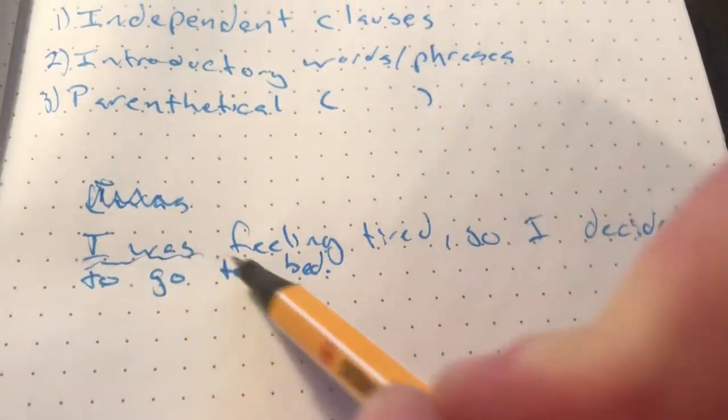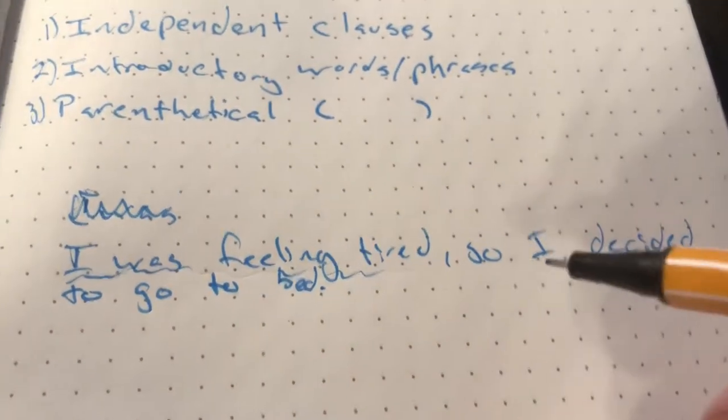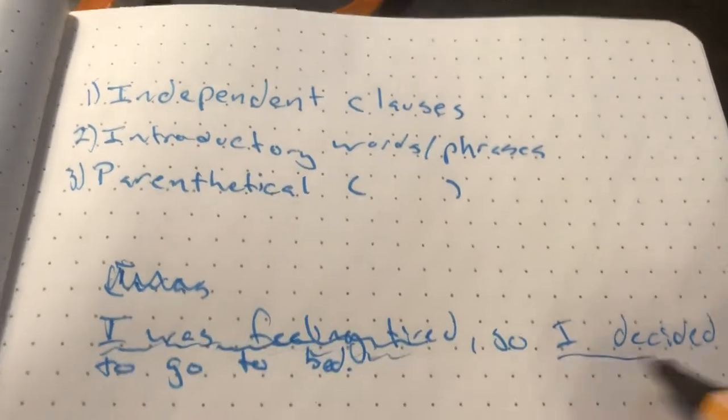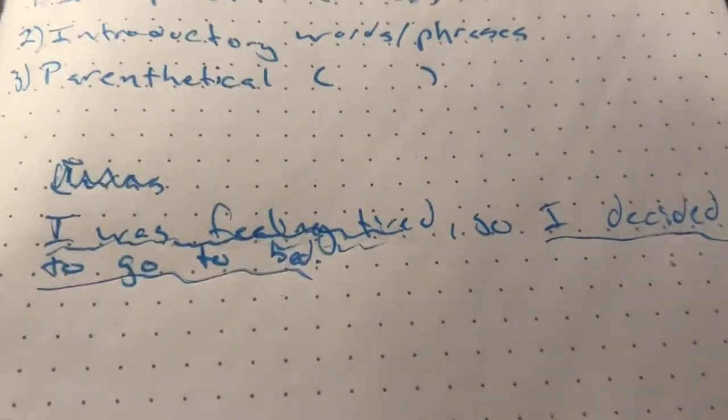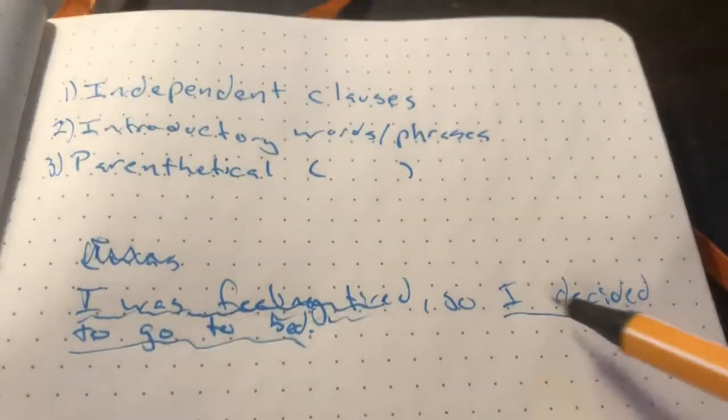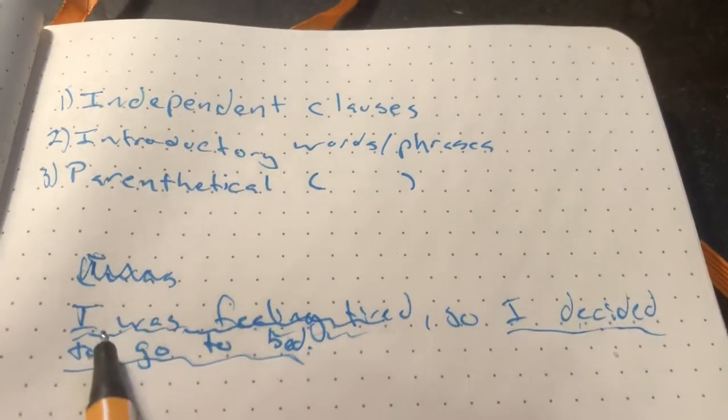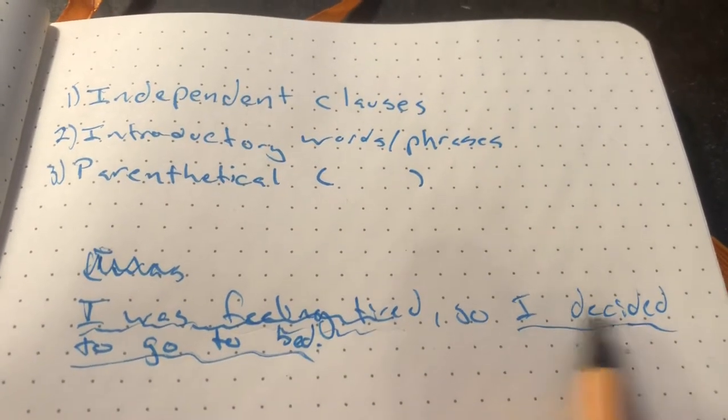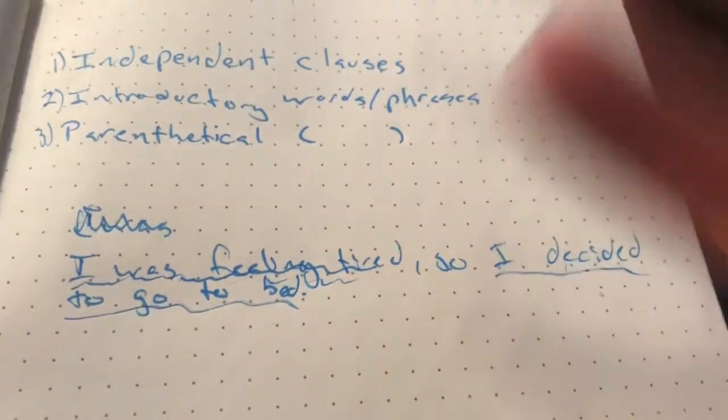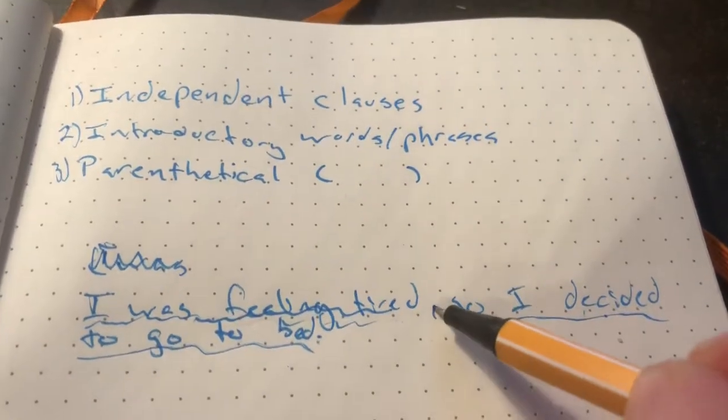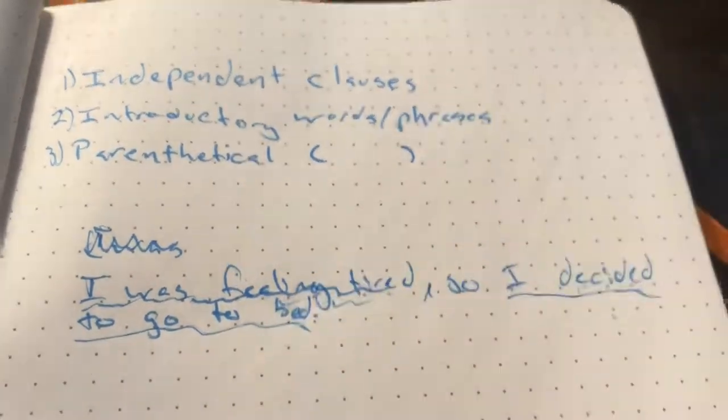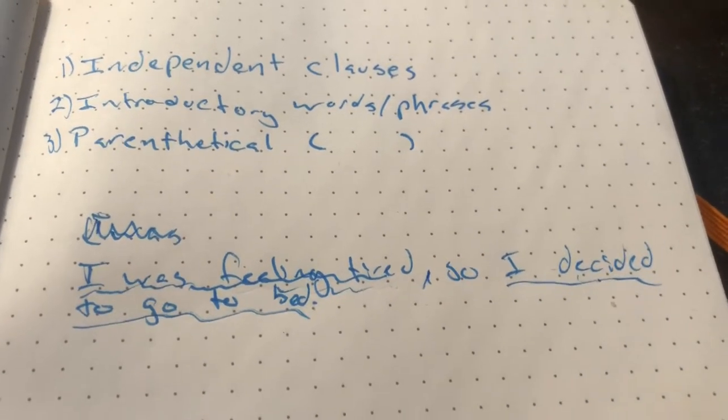This clause right here, I was feeling tired, could stand by itself, right? You could just say I was feeling tired, period. It would be kind of a boring sentence, but still could stand by itself. Now, I decided to go to bed. That could also stand alone. These two clauses, these two phrases, are not dependent on each other. There are two independent clauses. And we separate those because we want to make a complex sentence that's not boring. And so we can separate those independent clauses with a comma.